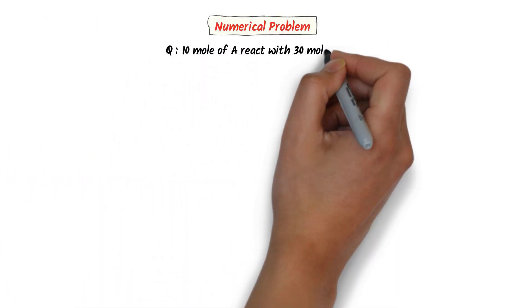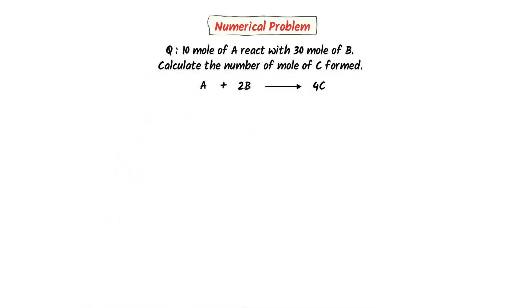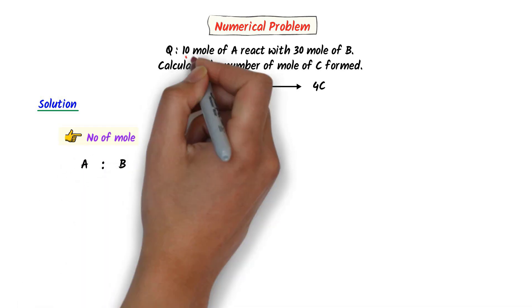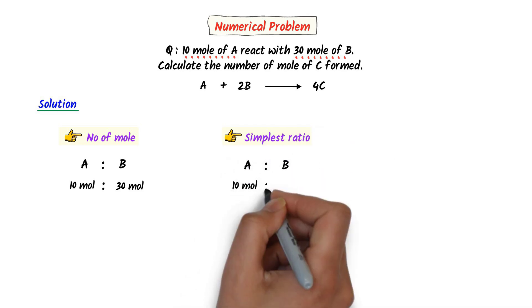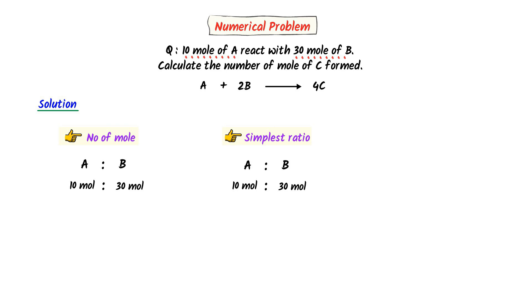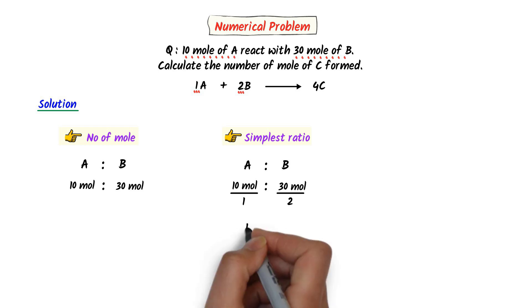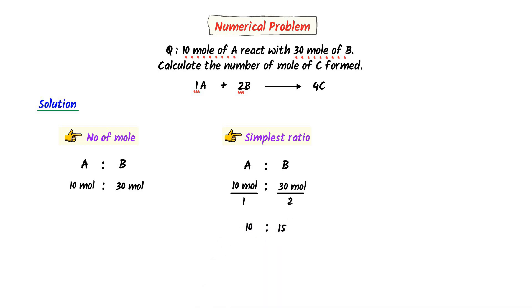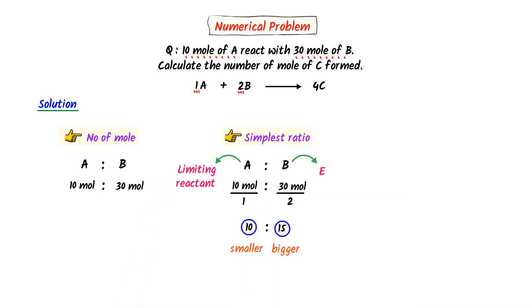Now consider this more difficult numerical problem: 10 moles of A react with 30 moles of B. Calculate the number of moles of C formed. In the first step, I find the number of moles of A and B. The given number of moles of A is 10 and that of B is 30. In the second step, I find the simplest ratio of A and B. According to the given reaction, the stoichiometric coefficient of A is 1 and that of B is 2. I get a ratio of 10 to 15. A has the smaller ratio, hence it is the limiting reactant, while B is the excess reactant.